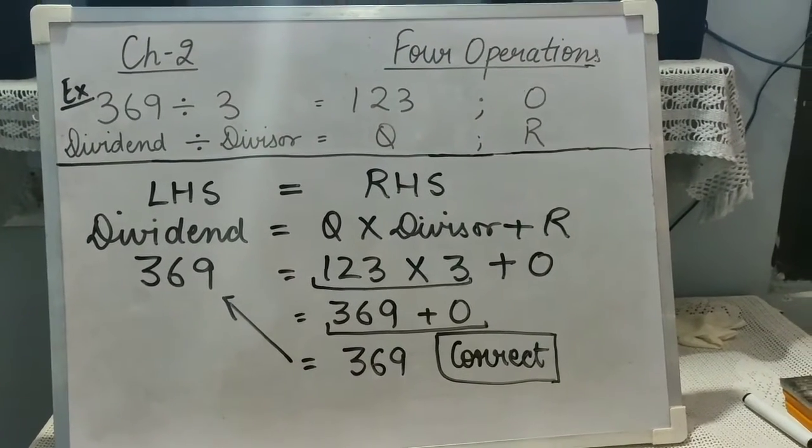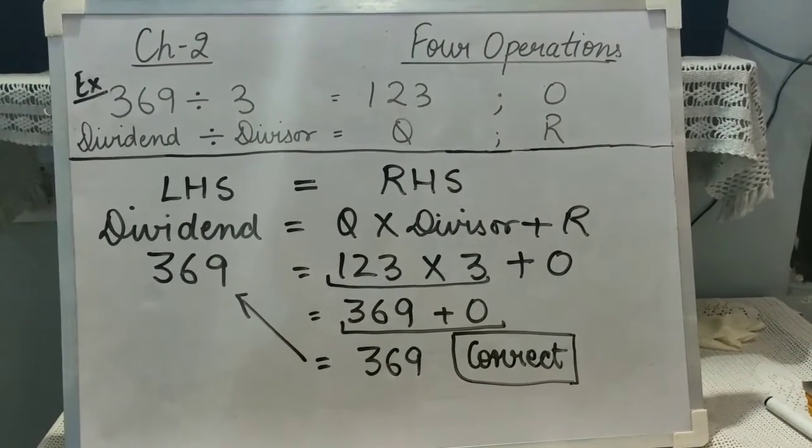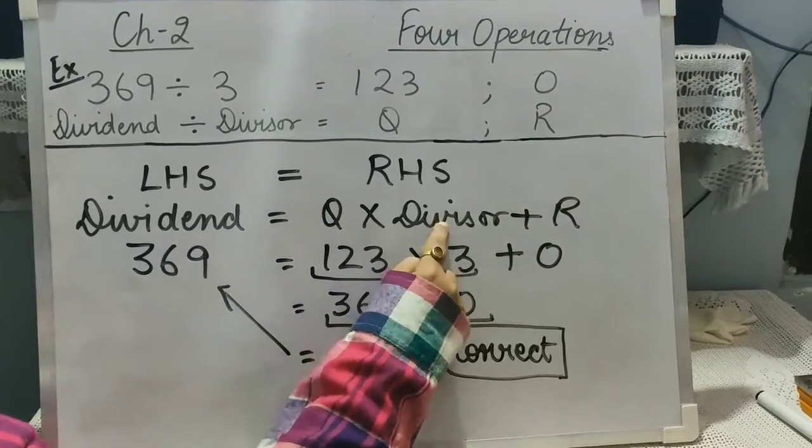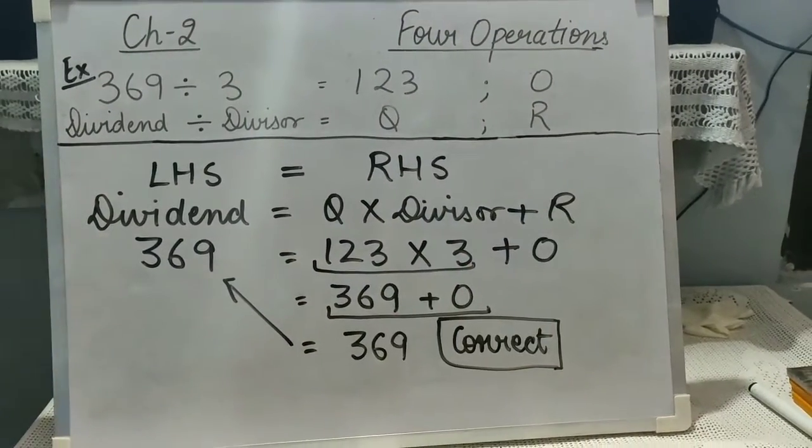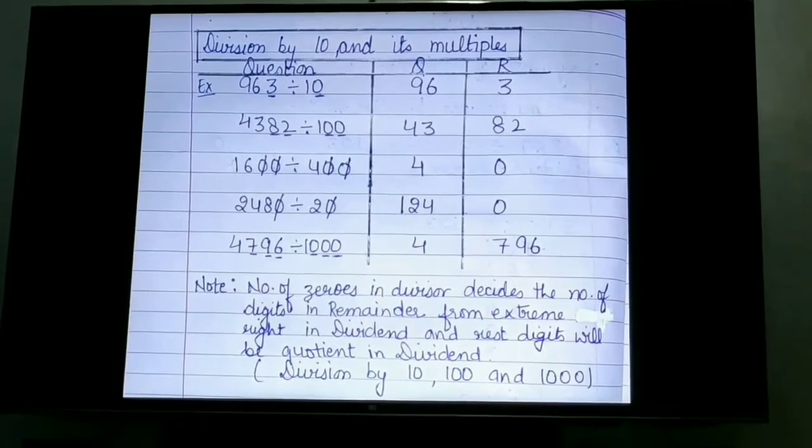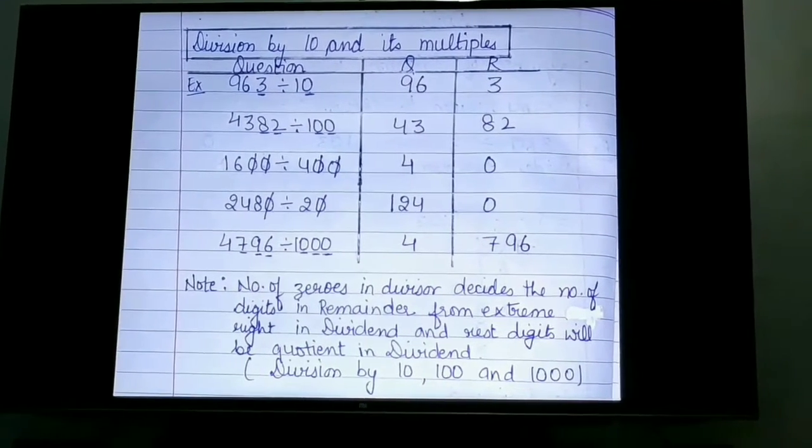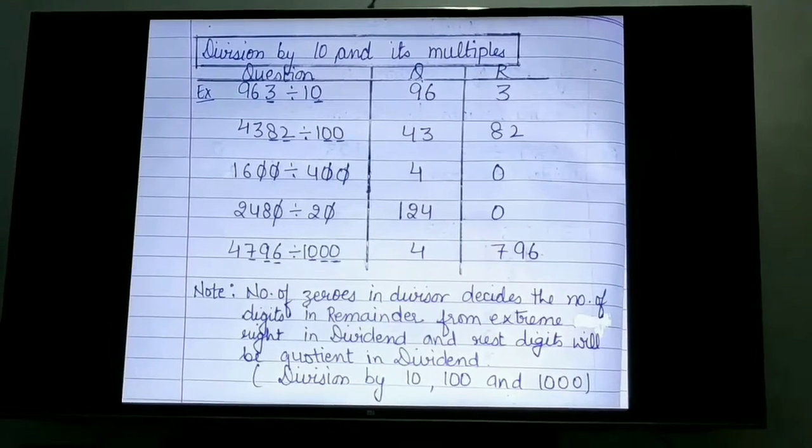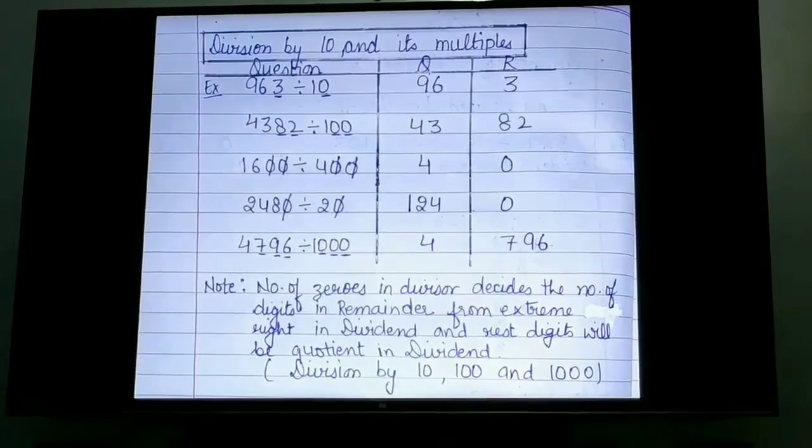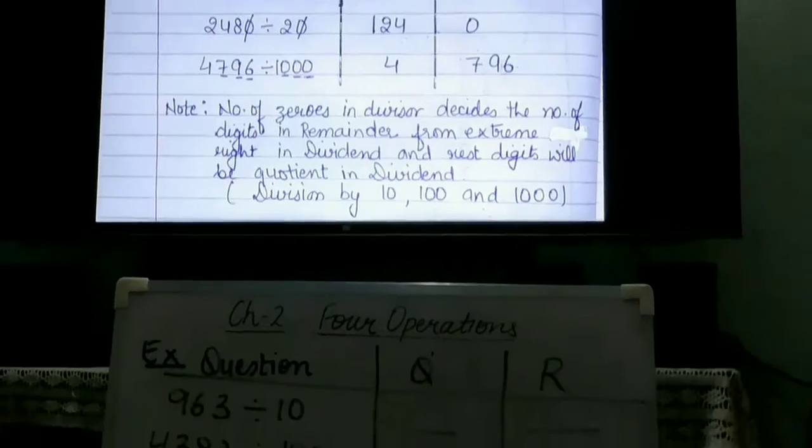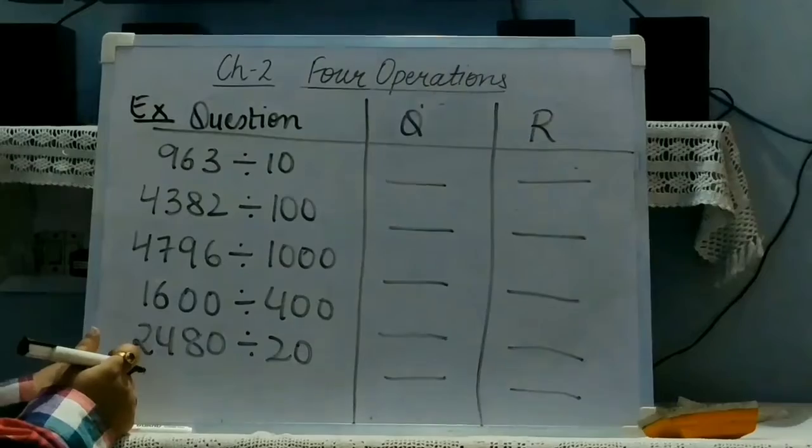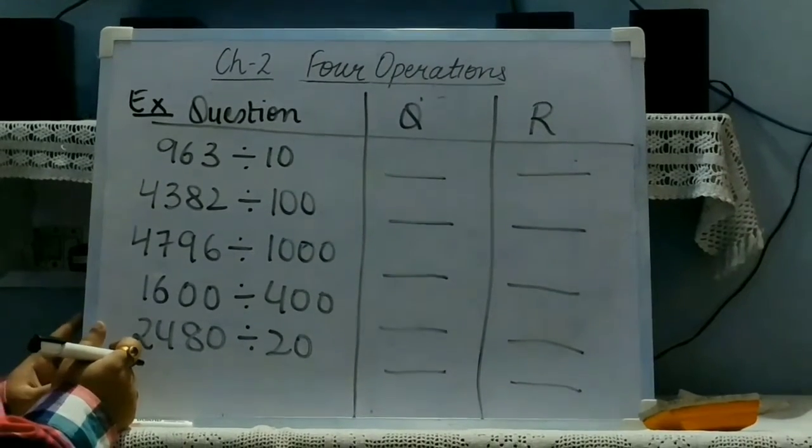It means, we can use this equation for checking our answer: dividend is equal to quotient multiply by divisor plus remainder. Now, the next point is division by 10 and its multiple, in which the divisor will be 10, 100, 1000, 420, etc. 10 or its multiple. Now, we are going to take examples.